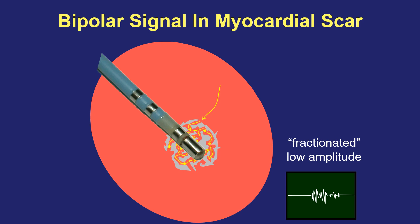We get excited when we are mapping reentrant ventricular tachycardia or a diseased atrium with lots of scar when we see fractionated signals, because the same physiology that creates a fractionated signal during sinus rhythm can allow for a reentry circuit to occur within this area of scar. The fractionated signal suggests the possibility that this area may be participating in the mechanism of a reentrant arrhythmia in the atrium or the ventricle.